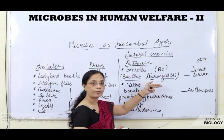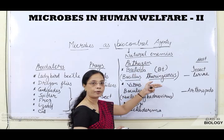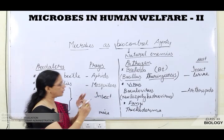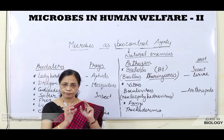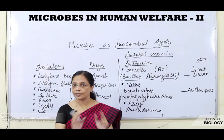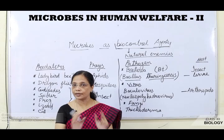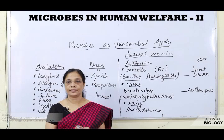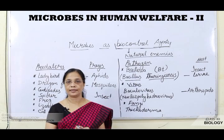So biocontrol agents protect plants from insects and pests, whether acting as predators — like ladybirds, dragonflies, centipedes, spiders, frogs, lizards, and cats — or as pathogens like bacteria, viruses, and fungi, all of which particularly attack specific pests without damaging other organisms. This is an important method to control pests and insects while balancing the ecosystem.